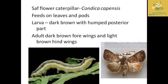The first pest is the safflower caterpillar, with the scientific name Condica capensis. The major symptom is feeding on leaves as well as buds. For identification, the larva is dark brown with a humped posterior part. The adult is dark brown with light brown hind wings.